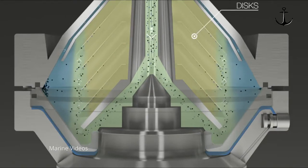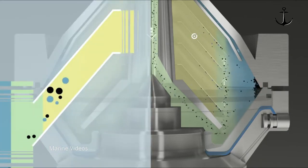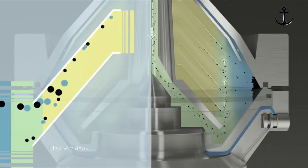Oil with remaining contamination of solids and water enters the space between the discs. Oil with contaminants flows towards the center of the bowl between the discs.